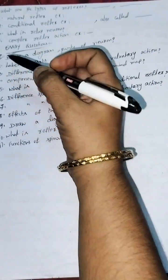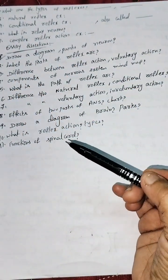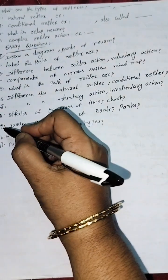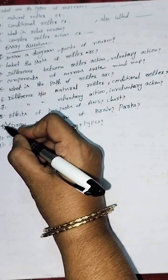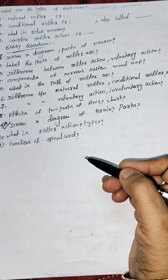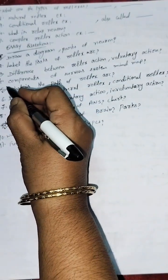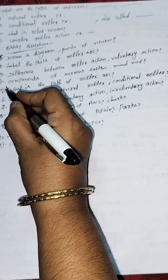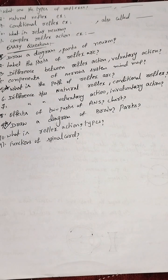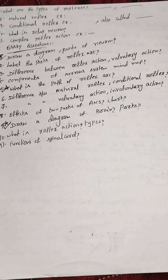The neuron diagram is very important, and the reflex arc is also very important. The brain diagram with labeled parts and the path of the reflex arc are also very important. These are the key essay questions in the nervous system chapter.